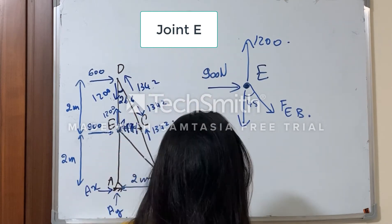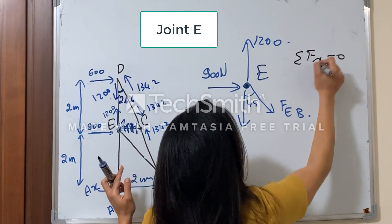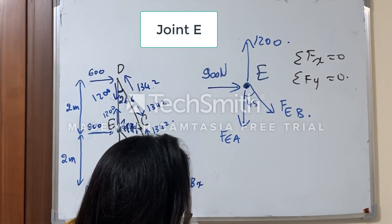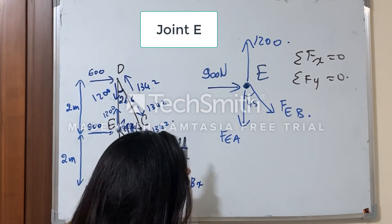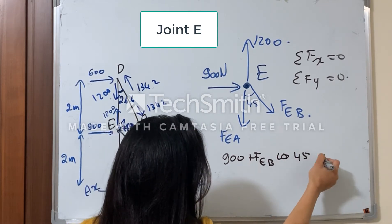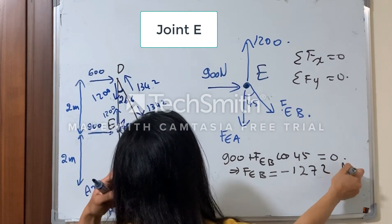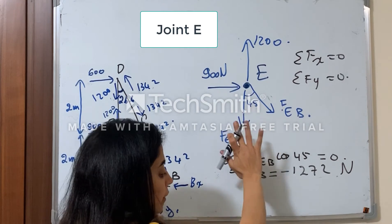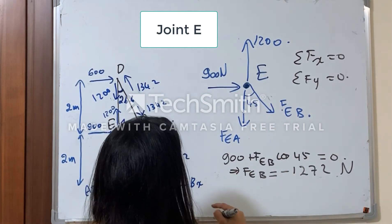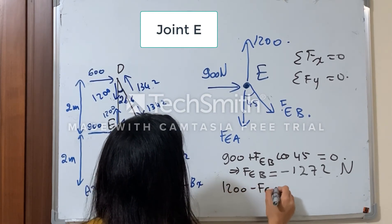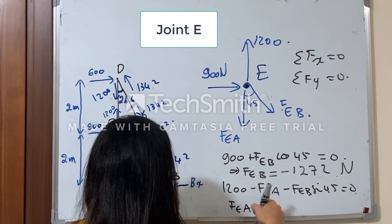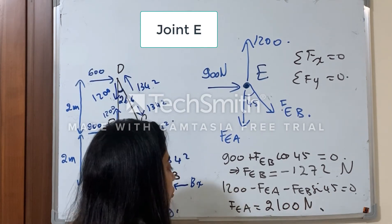Let's apply sum of Fx equals zero: 900 plus FEB cosine 45° equals zero, so FEB equals minus 1272 N — it is negative, meaning I should flip its direction, but I'll do that after finishing the analysis and continue using the same assumed direction. Now sum of Fy equals zero gives: 1200 minus FEA minus FEB sine 45° equals zero.